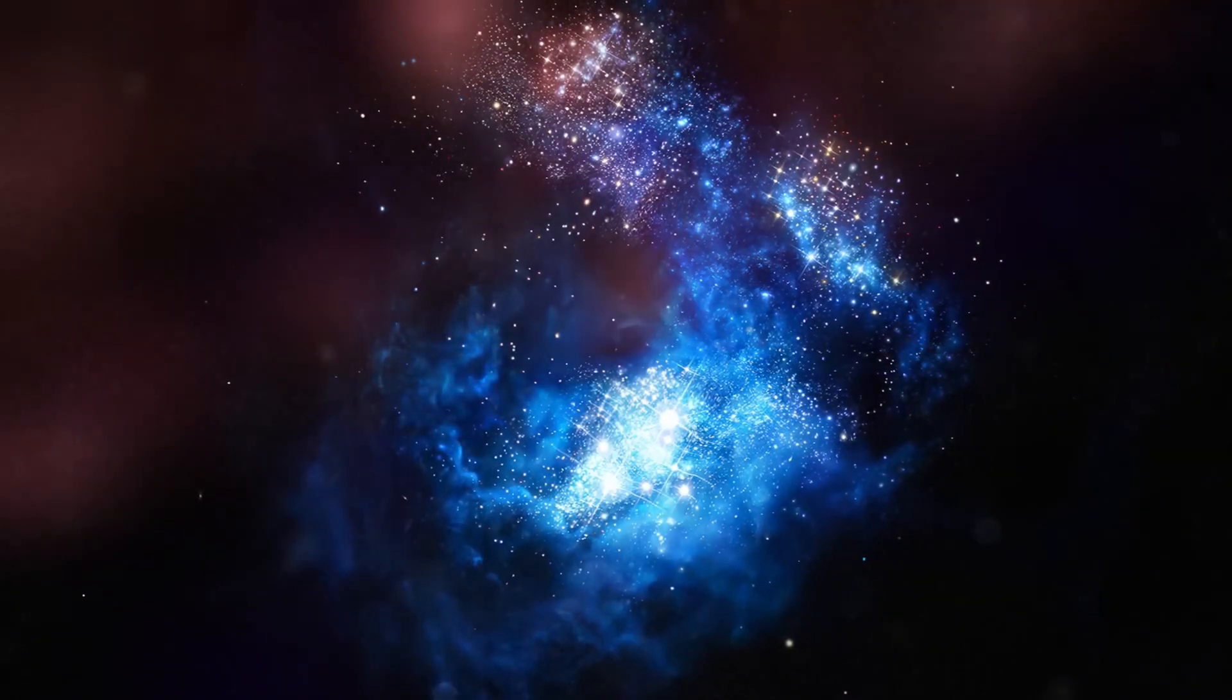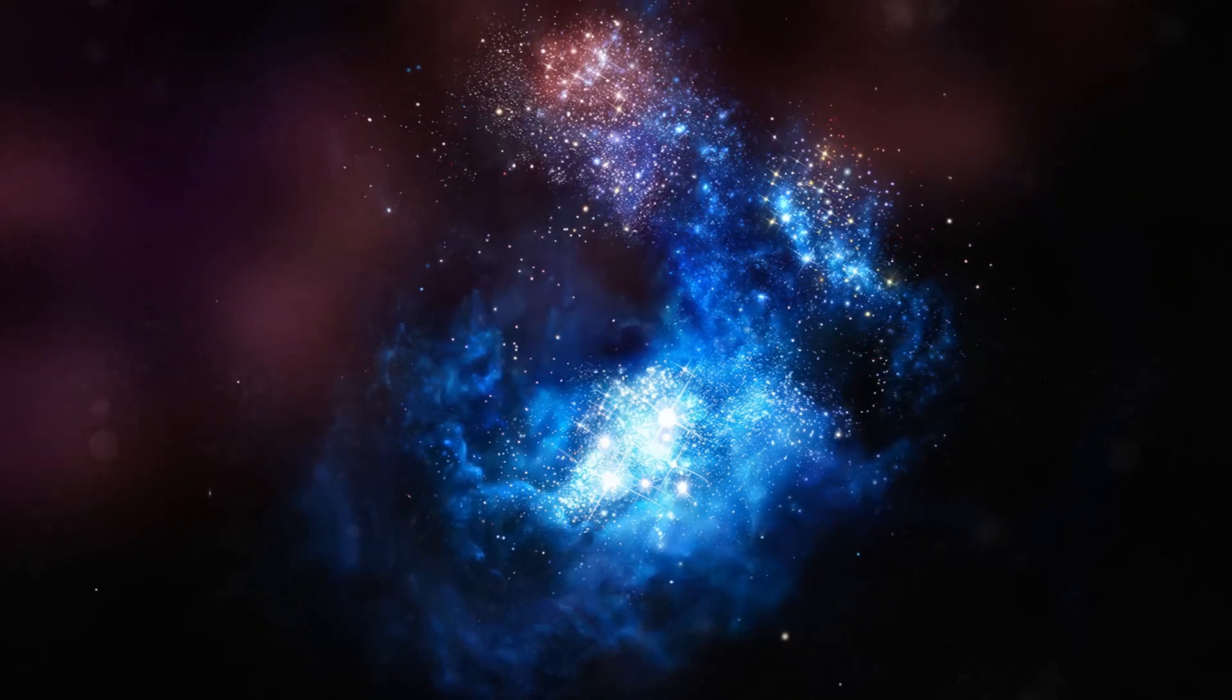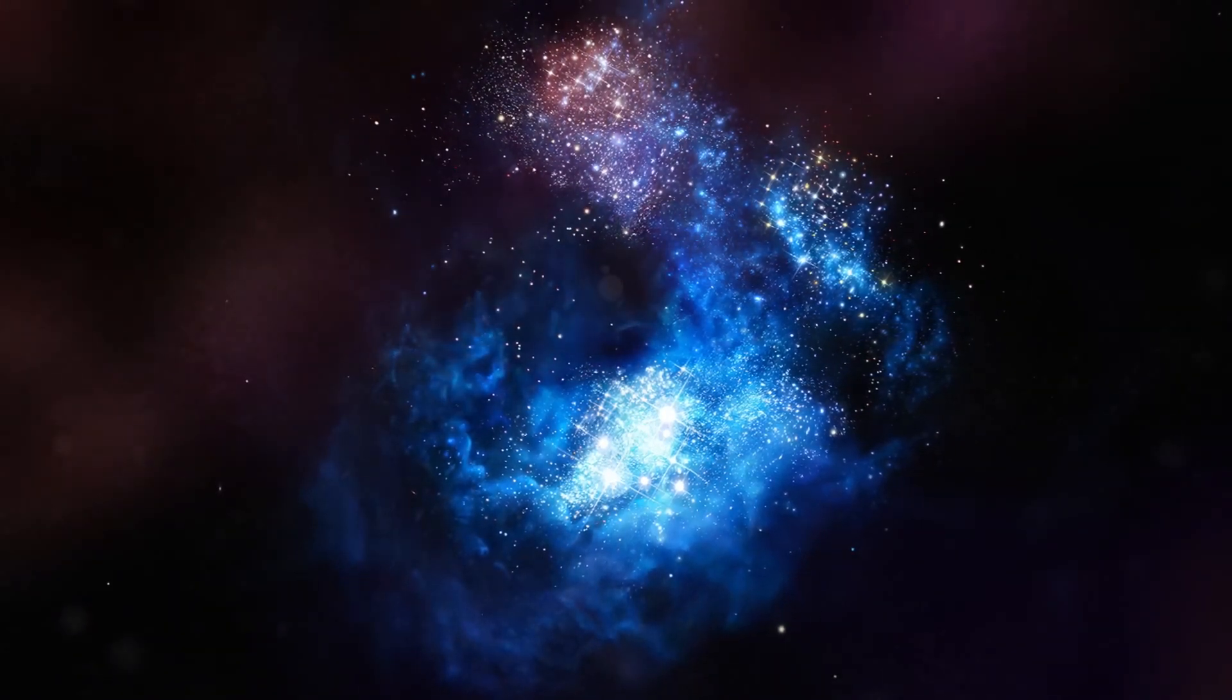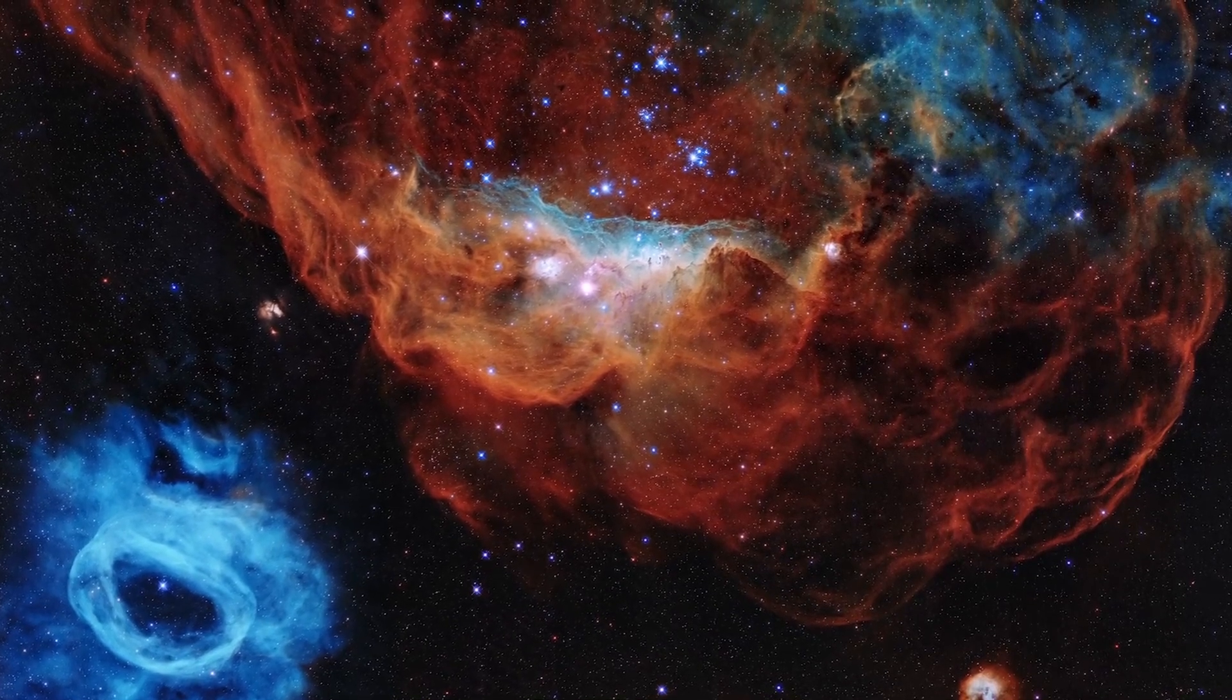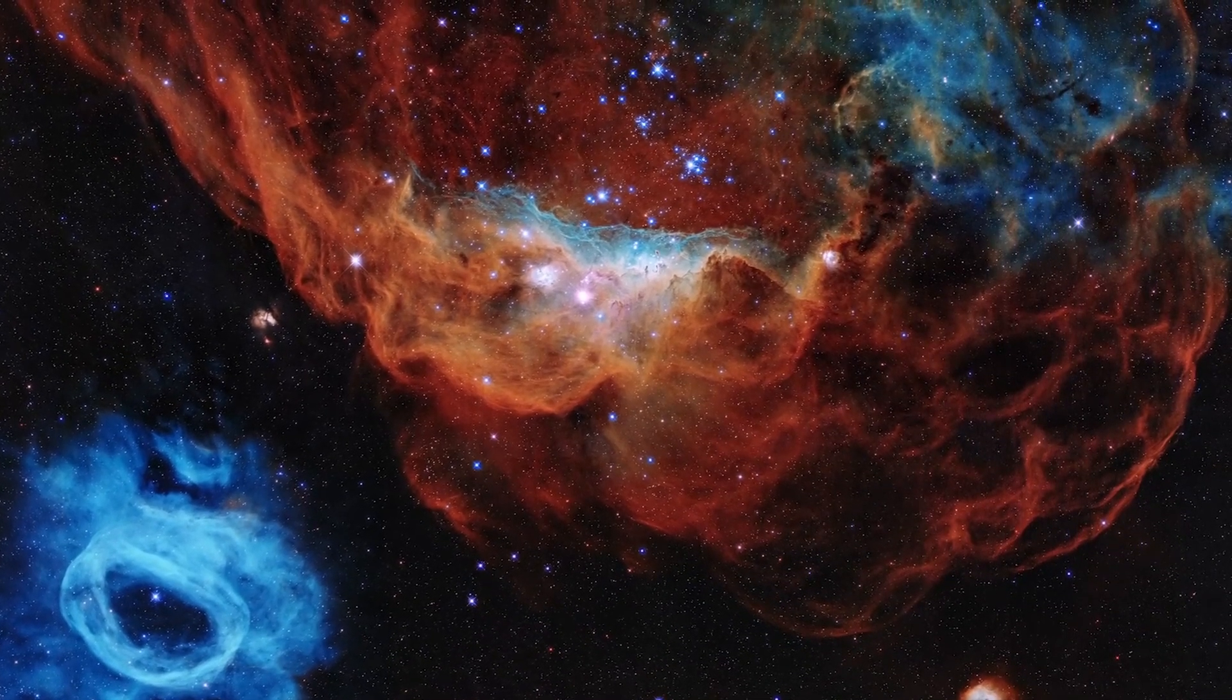Moreover, this galaxy is isolated, with no companions or signs of interaction with other galaxies. So, how did we obtain this information about the quiescent galaxy and how did James Webb measure these properties?